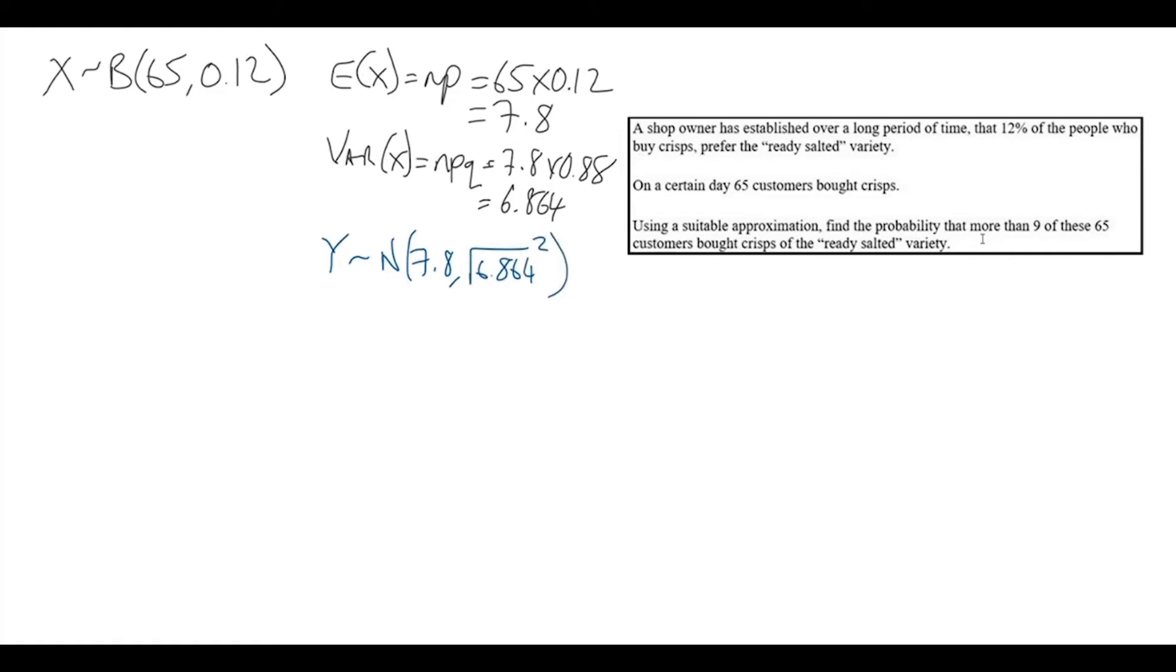Remember that we write the variance in square root squared form so that we know the standard deviation that we're going to use. The question asks us to find the probability that more than 9, so in the binomial distribution x is greater than 9.